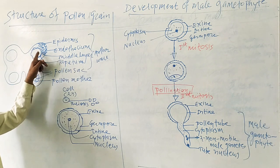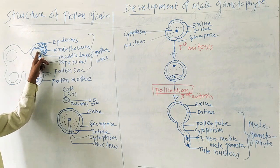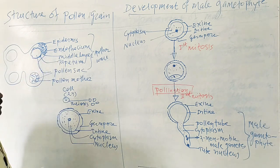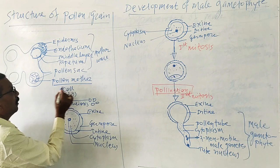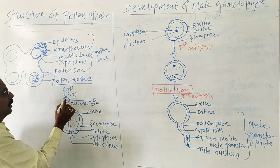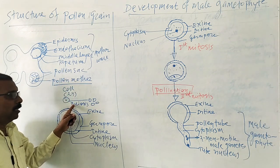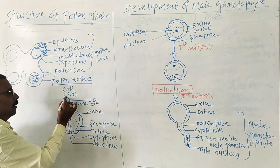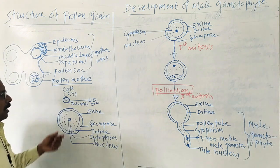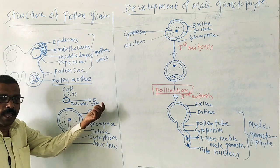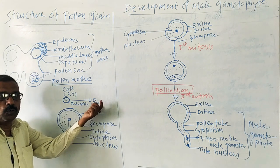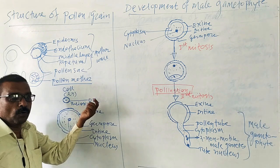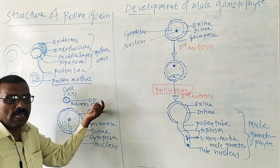Tapetum surrounds the pollen sac. The pollen sac contains pollen mother cells, which are haploid. These pollen mother cells divide by meiosis and give rise to four haploid microspores or pollen grains, which are known as male gametes.